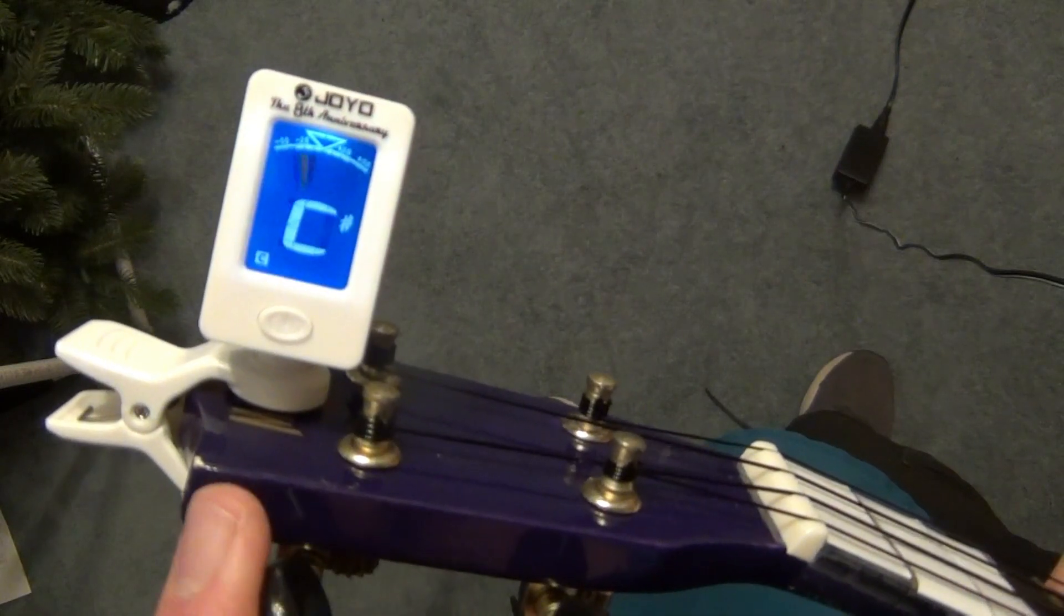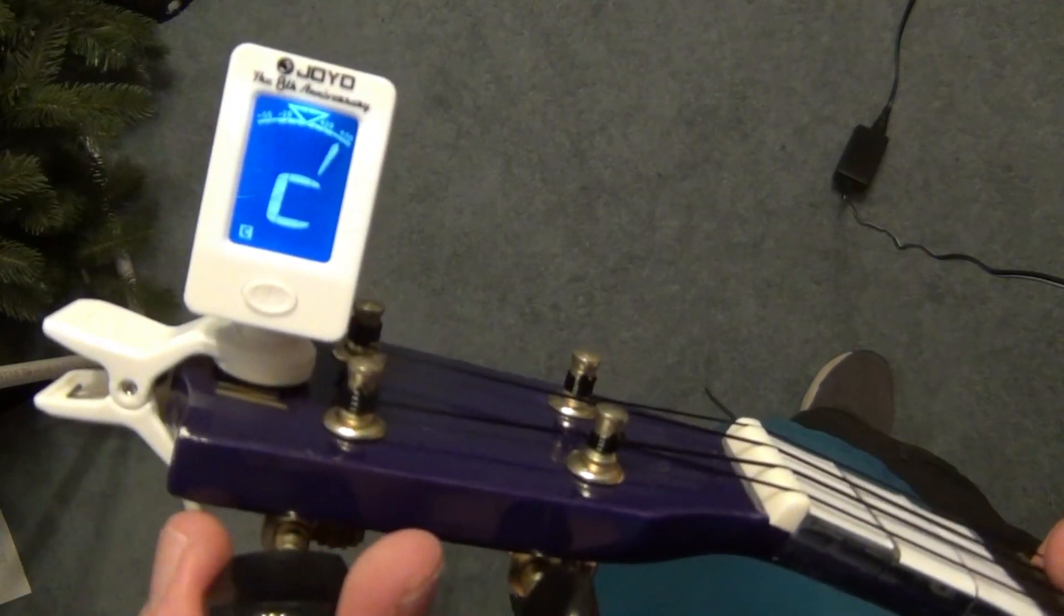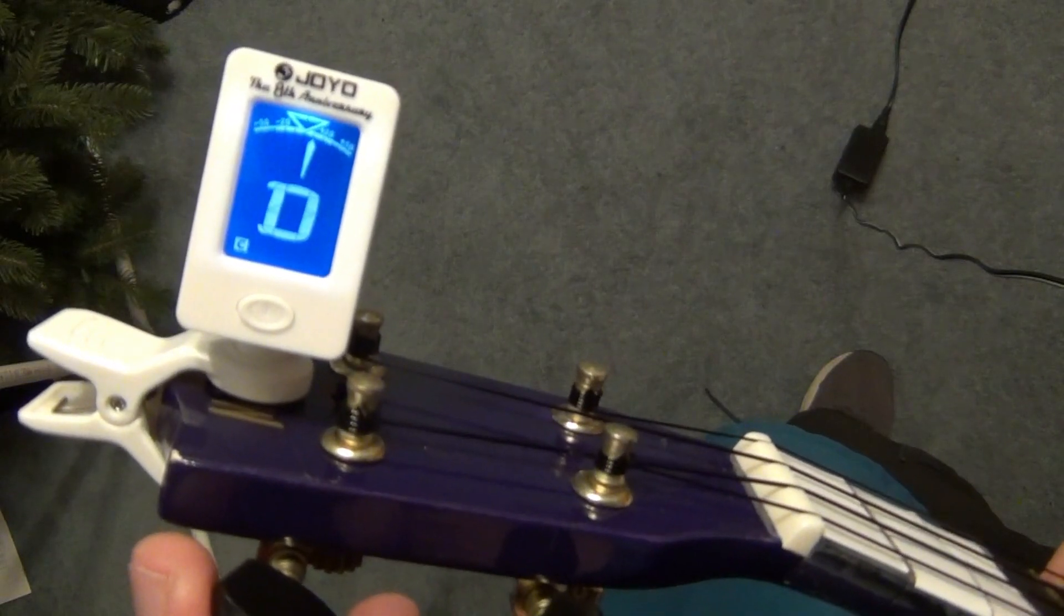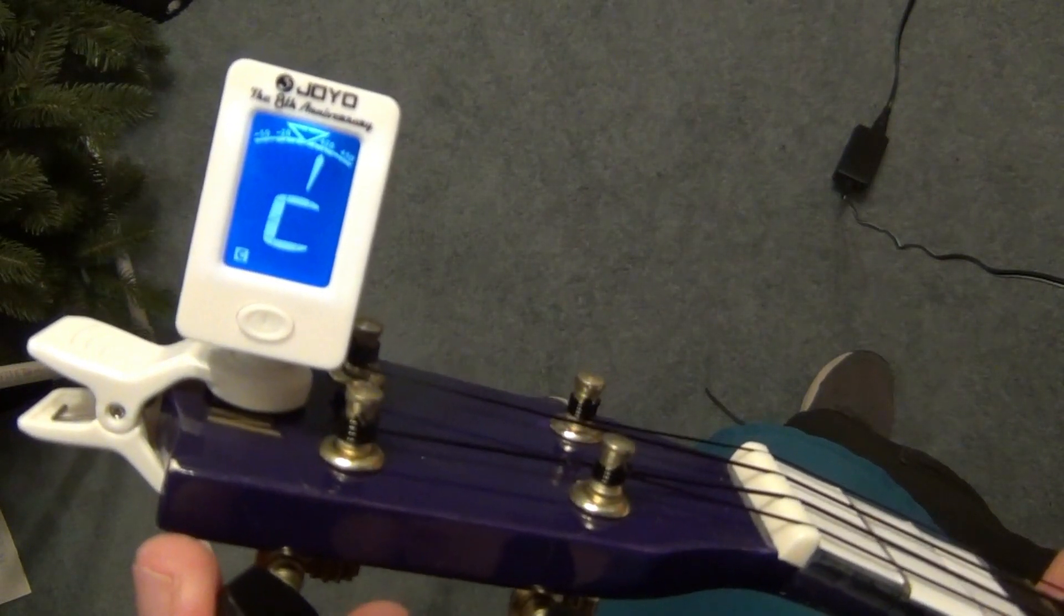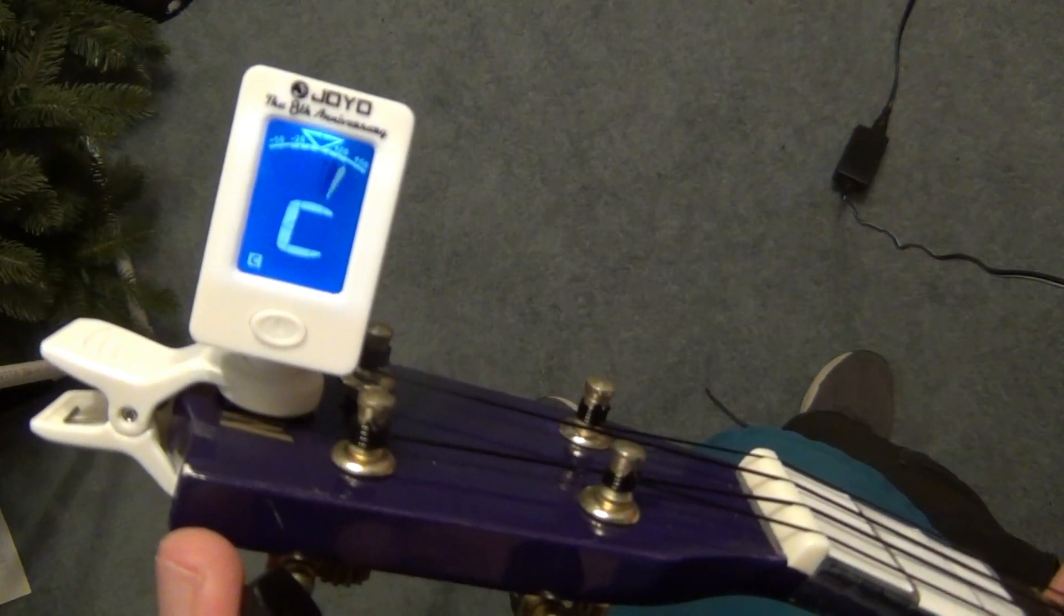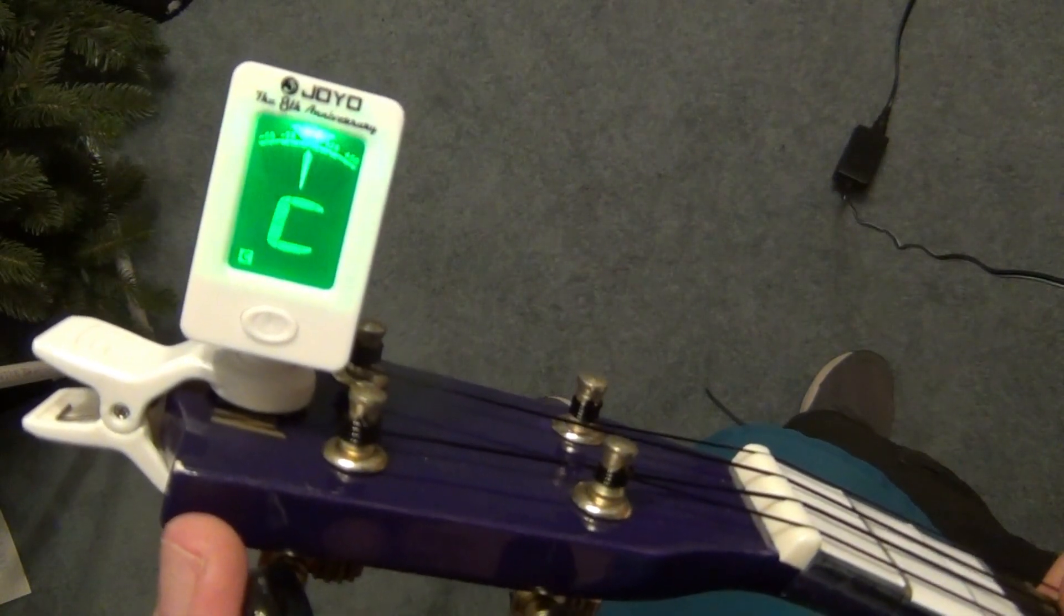So I'm at a D sharp now. D. C sharp. Close to the C. It says C. It's still a little sharp, loosen. Green light.